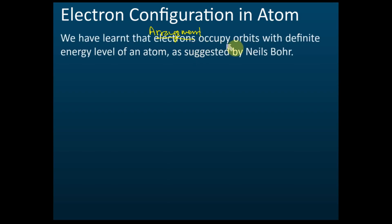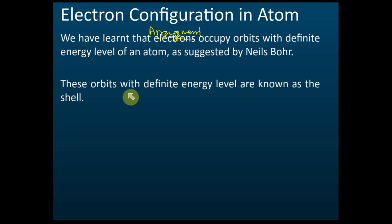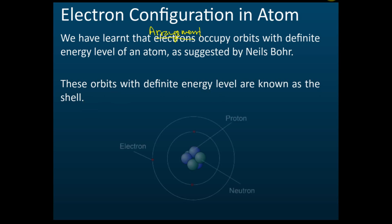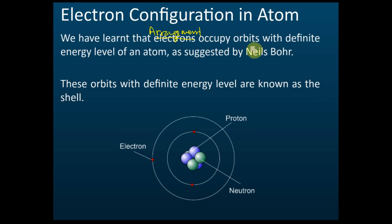We have learned that electrons occupy orbits with definite energy levels in an atom, as suggested by Niels Bohr. These orbits have certain energy levels and are known as shells, according to Niels Bohr's model.